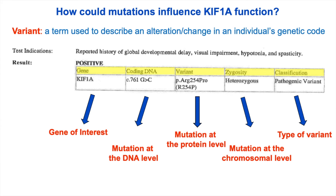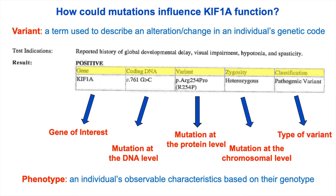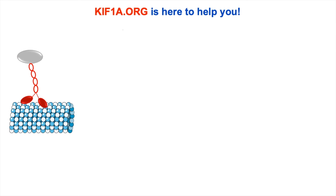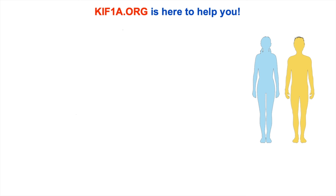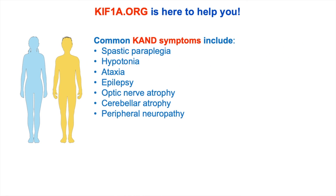Now because CAND can result from so many different mutations in different locations within the KIF-1A gene, we would expect that patients are going to be affected by their mutation differently than other patients. We call this a difference in phenotype or phenotypic expression. A phenotype is an individual's observable characteristics based on their genotype. So it makes sense that if our CAND patients have unique mutations, we tend to see a unique phenotype for that patient — a set of symptoms that is unique to that specific individual. We are beginning to learn more about how these problems occurring at the cellular level result in a wide range of challenges and symptoms experienced by people living with CAND, such as spastic paraplegia, hypotonia, ataxia, epilepsy, optic nerve atrophy, cerebellar atrophy, and peripheral neuropathy.